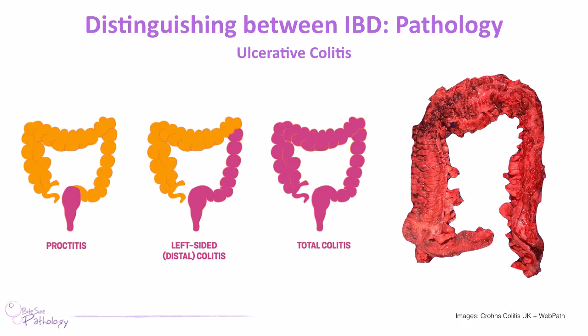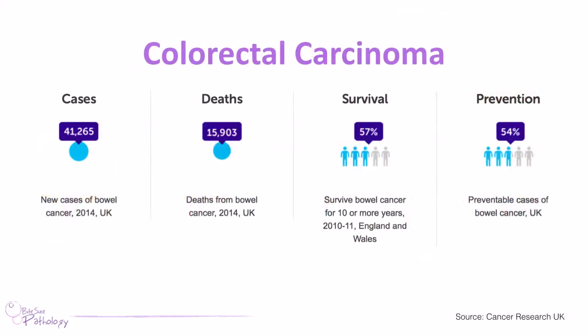To summarise IBD: Crohn's disease is characterised by transmural inflammation with granulomas, skip lesions, and serpentine ulcers, whereas in ulcerative colitis the inflammation is confined to the bowel mucosa, only affecting the colon, with crypt abscess formation. Note that we haven't covered systemic manifestations of IBD here — that will be in another tutorial. Moving on to colorectal cancer: it's common in the UK, tends to affect men more than women, with around just over 40,000 cases in 2014, but survival has significantly improved with the introduction of bowel cancer screening.